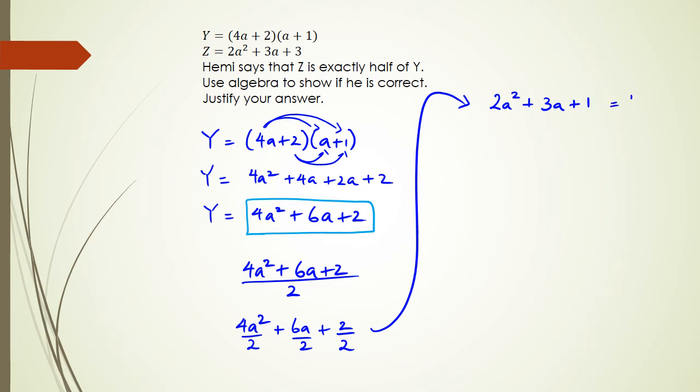Half of Y equals 2a squared plus 3a plus 1. Okay, now Hemi says that Z is exactly half of Y. Well, Z is actually 2a squared plus 3a plus 3.